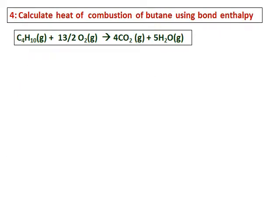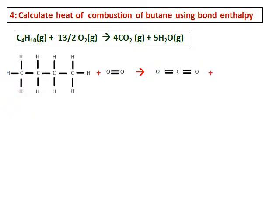Calculate heat of combustion of butane using bond enthalpy. The Lewis structure of butane is given over there, combined with oxygen and we know that there is oxygen-oxygen double bond and these two when combined together, I get carbon dioxide and write down the Lewis structure of carbon dioxide and you know that carbon has got two double bonds with oxygen and then the other product form this water and write down the structure of water, HOH.